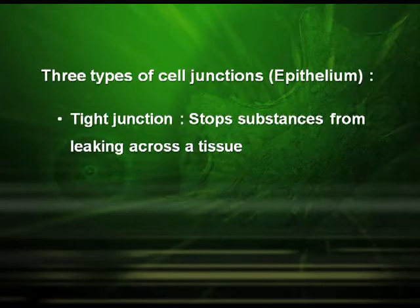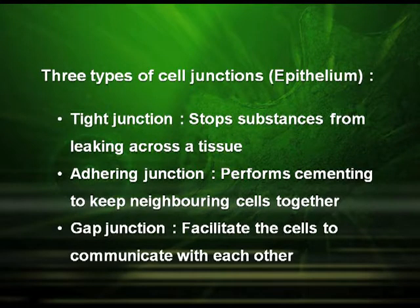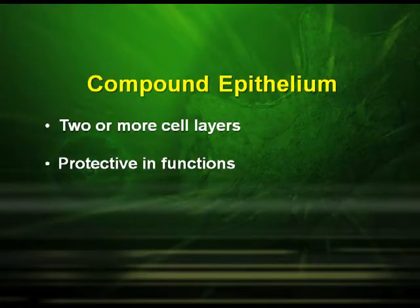These tissues have three types of cell junctions. The tight junction stops substances from leaking across a tissue. The adhering junction performs cementing to keep neighboring cells together. The gap junction facilitates cells to communicate with each other. Compound epithelium tissue is made up of two or more cell layers and is protective in function.